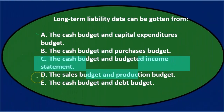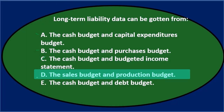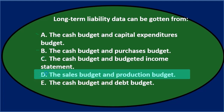Option D says the sales budget and the production budget. There's not much connection between sales and long-term liability, and the production budget doesn't really tie in either. So probably not D.